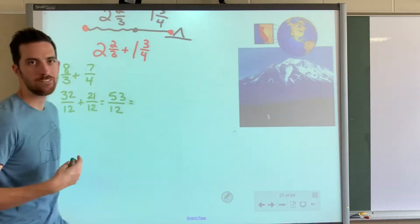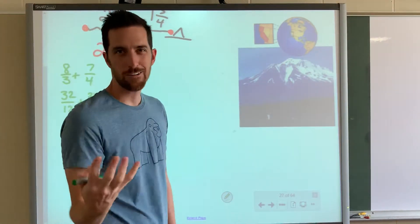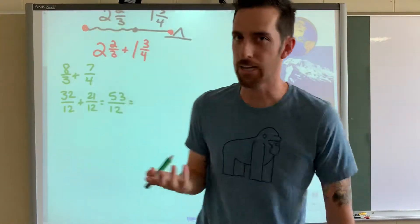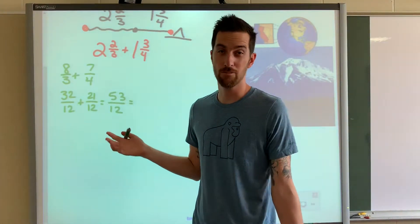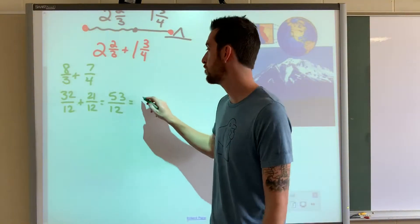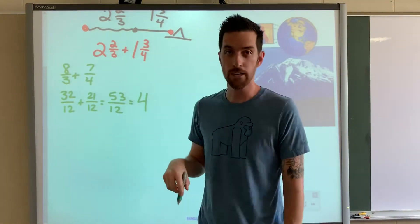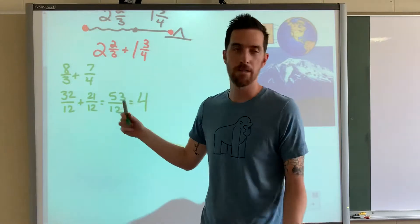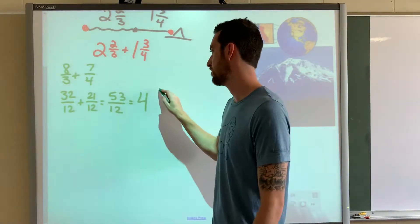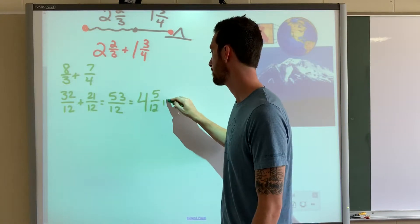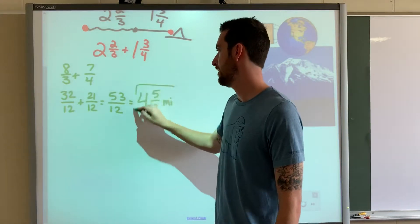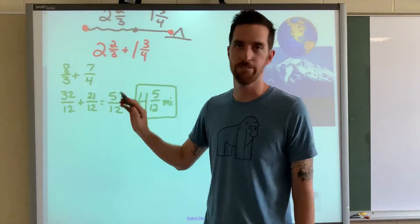And then we can turn that back into a mixed number. Now since they started us with mixed numbers, they probably want their answer as a mixed number. So how many 12s go into 53? Four of them. Because four times 12 is 48. And 53 minus 48 leaves you with 5-twelfths left. And what was that, miles? That works perfectly.